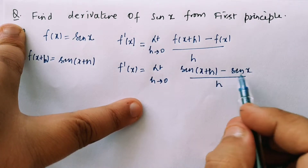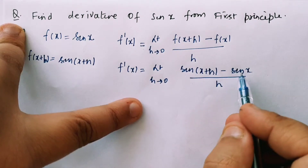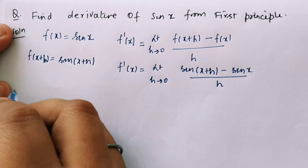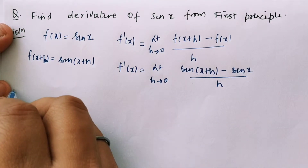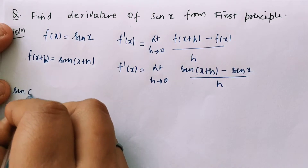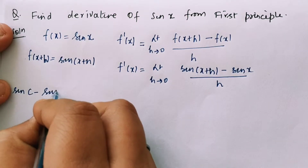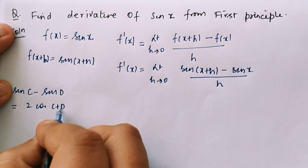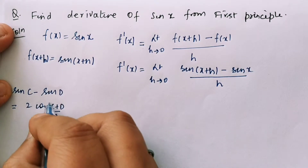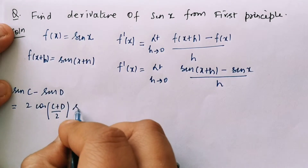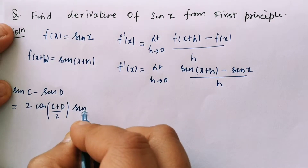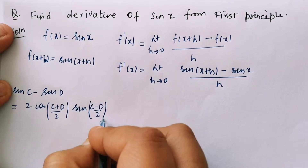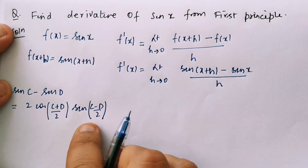Now, if we look at this carefully, we can see a formula of the type sin C minus sin D, which we have studied in trigonometry. So let's first recall that formula — sin C minus sin D equals 2 cos((C+D)/2) multiplied by sin((C-D)/2). That is the formula for sin C minus sin D.